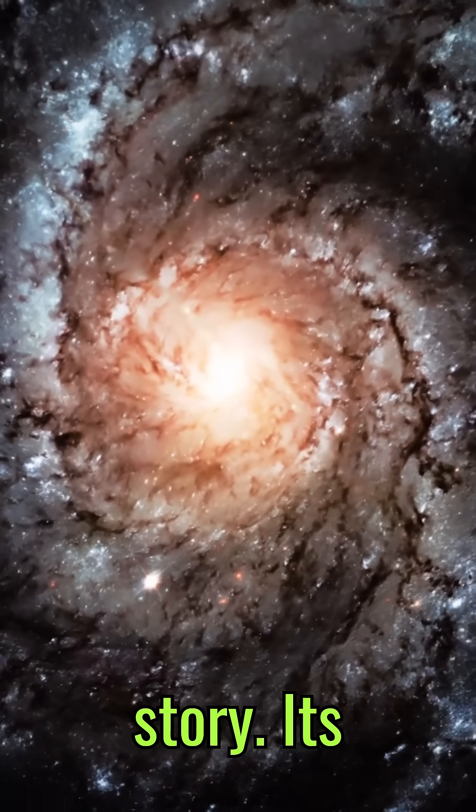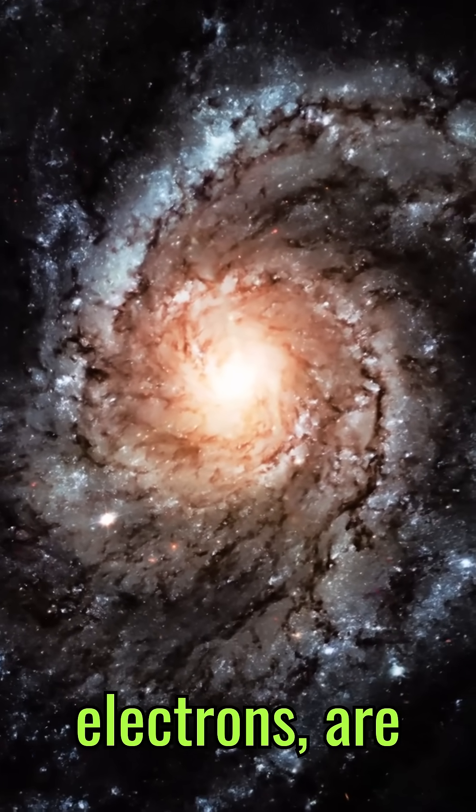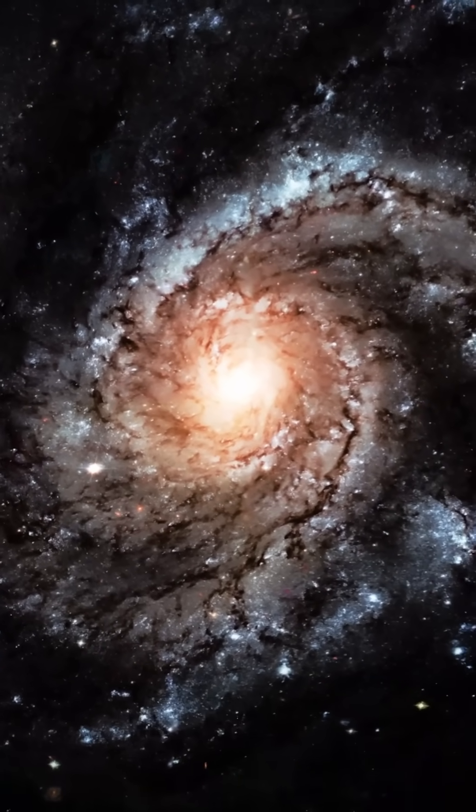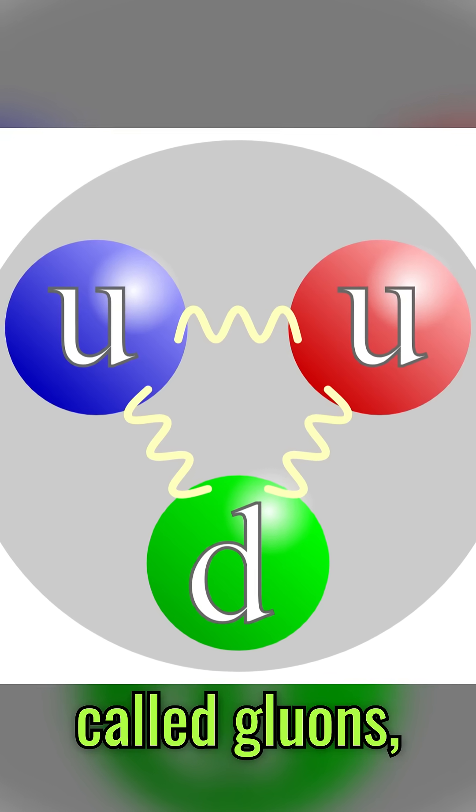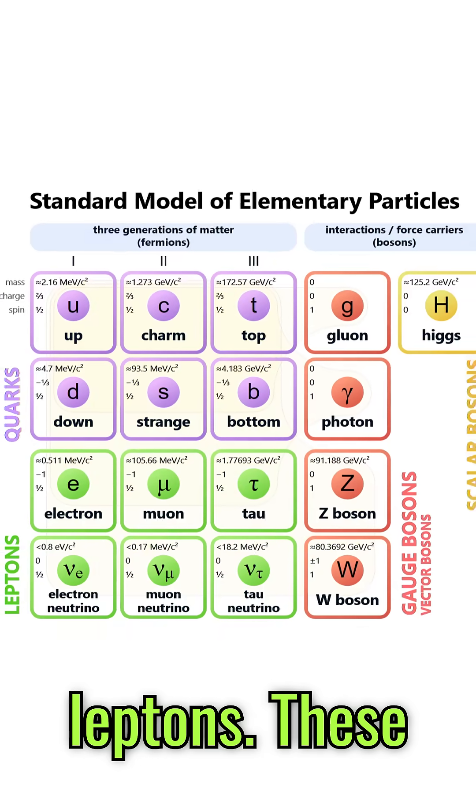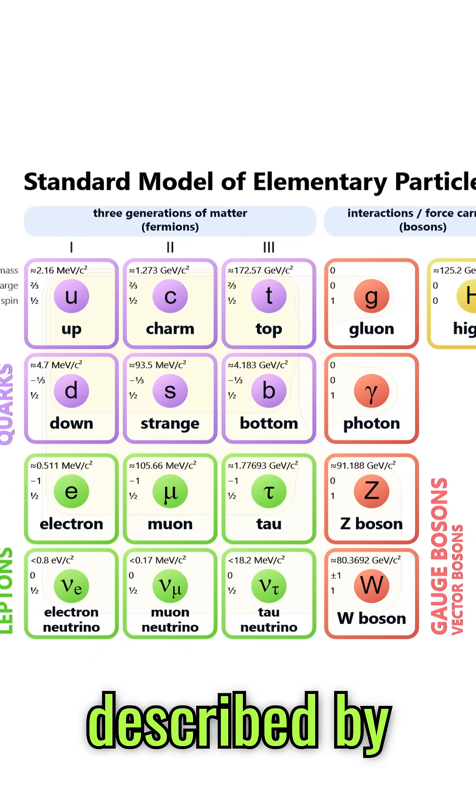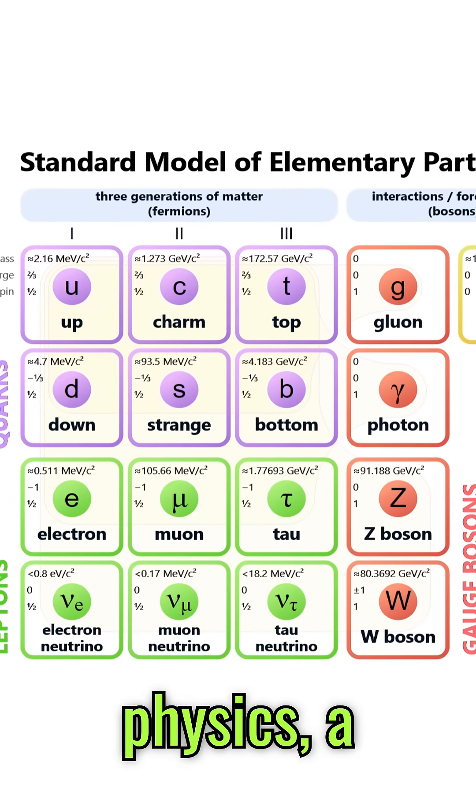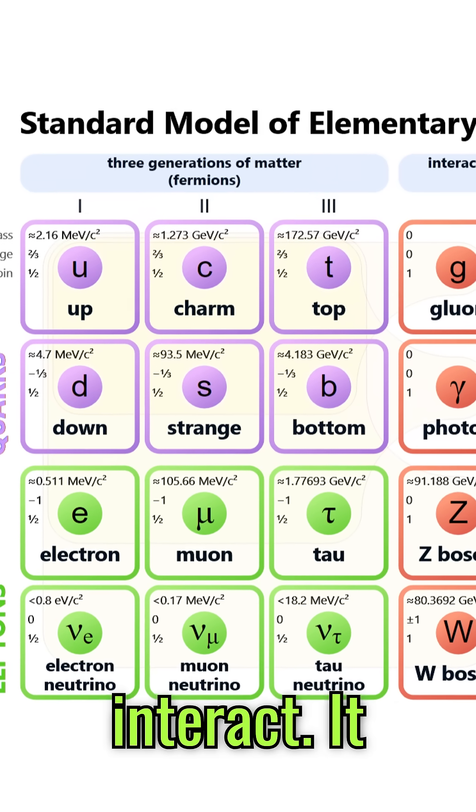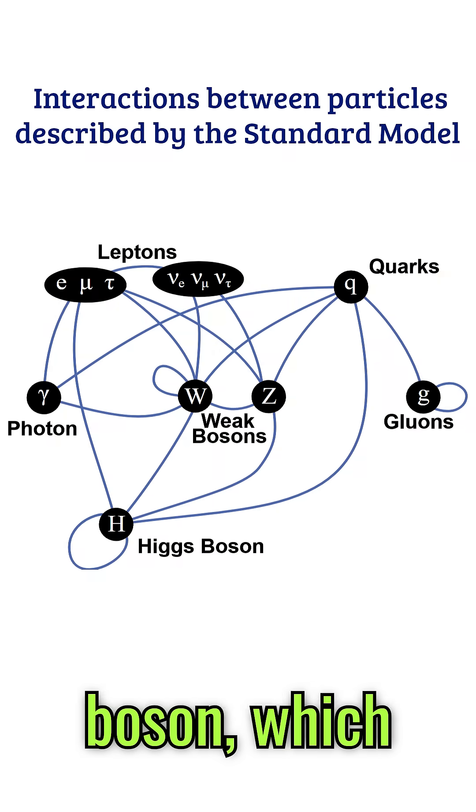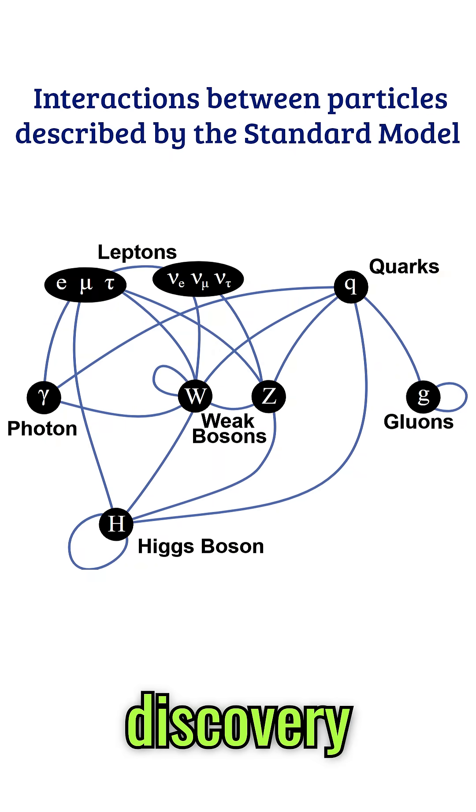But the atom isn't the end of the story. Its components—protons, neutrons, and electrons—are made of even smaller particles. Protons and neutrons are built from quarks, held together by particles called gluons, while electrons belong to a group called leptons. These particles are described by the Standard Model of Particle Physics, a framework that explains how the universe's fundamental building blocks interact. It even predicts particles like the Higgs boson, which gives other particles mass, a discovery confirmed in 2012.